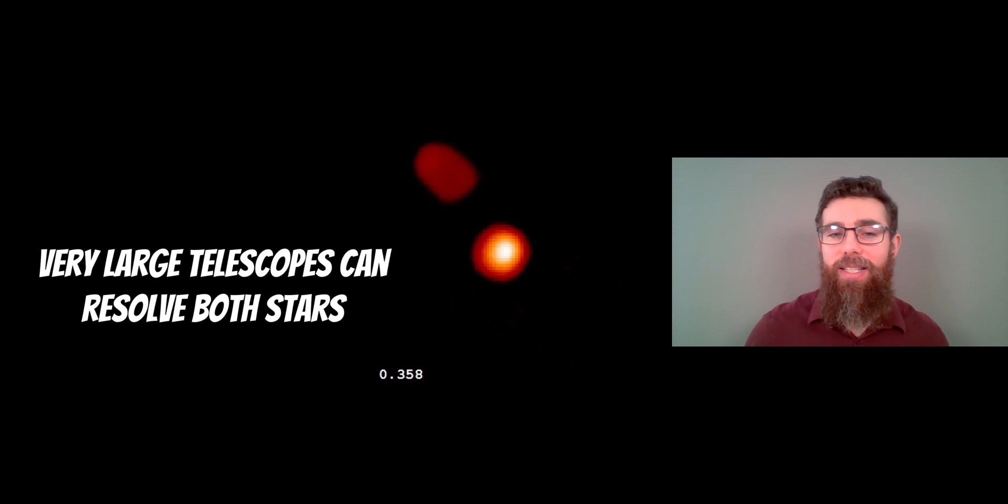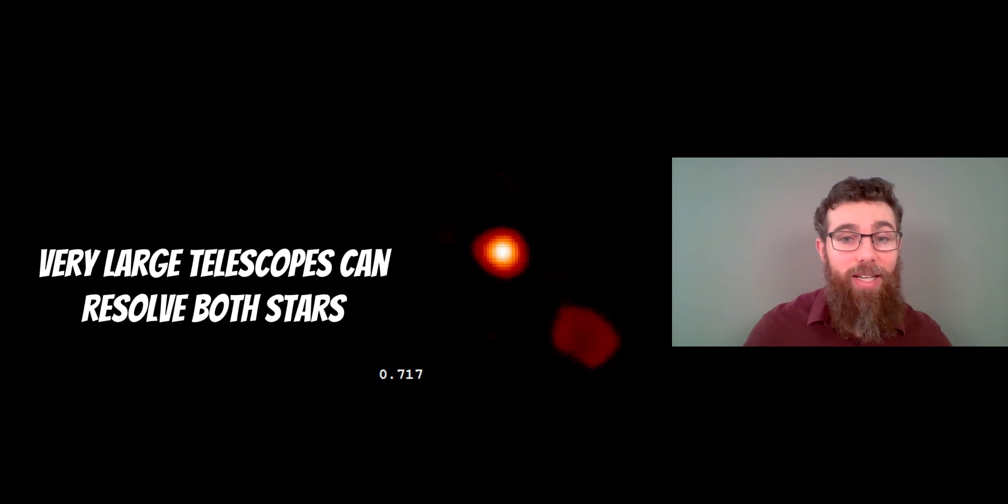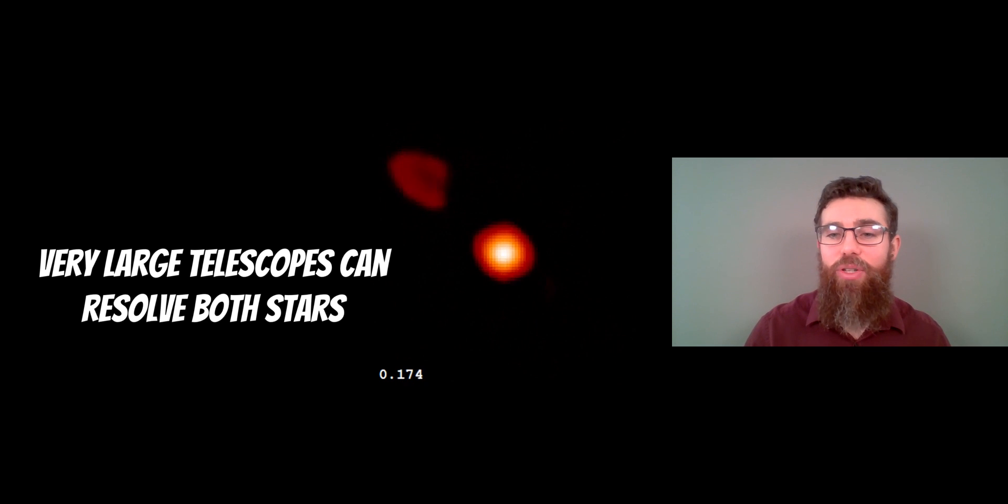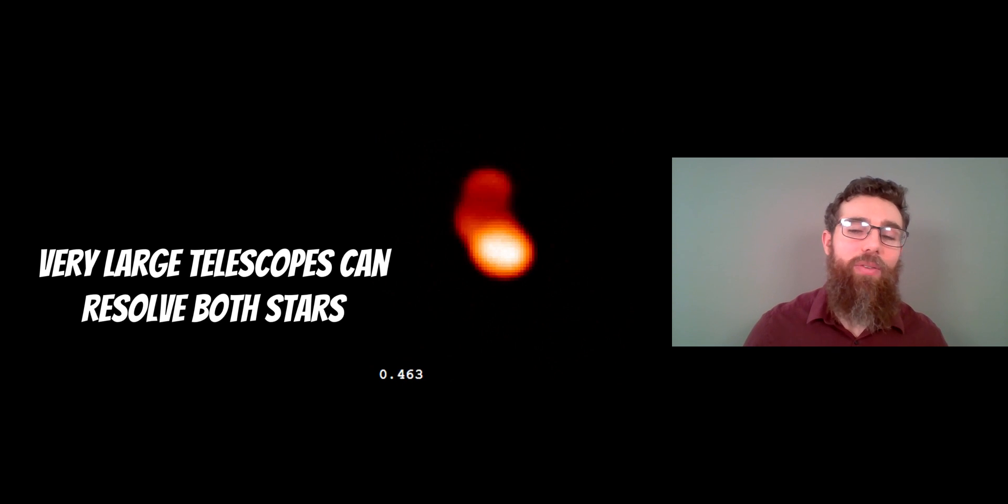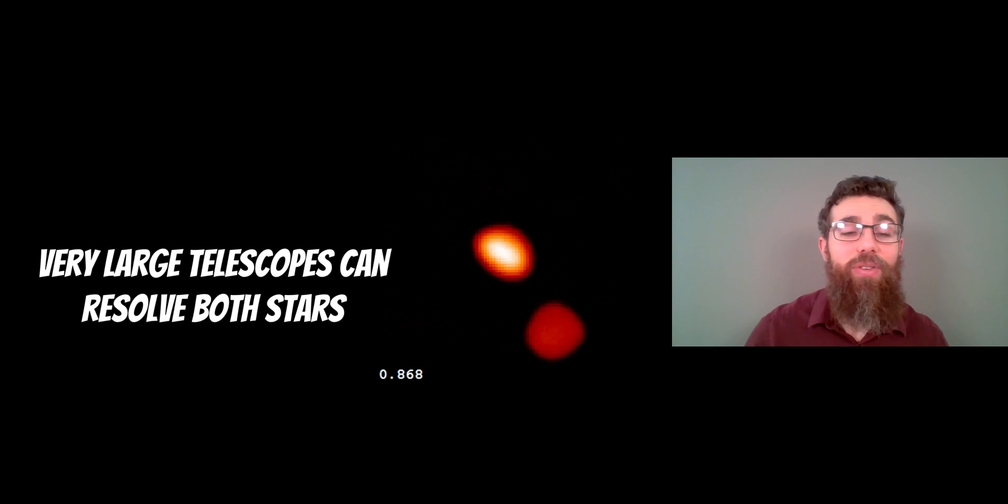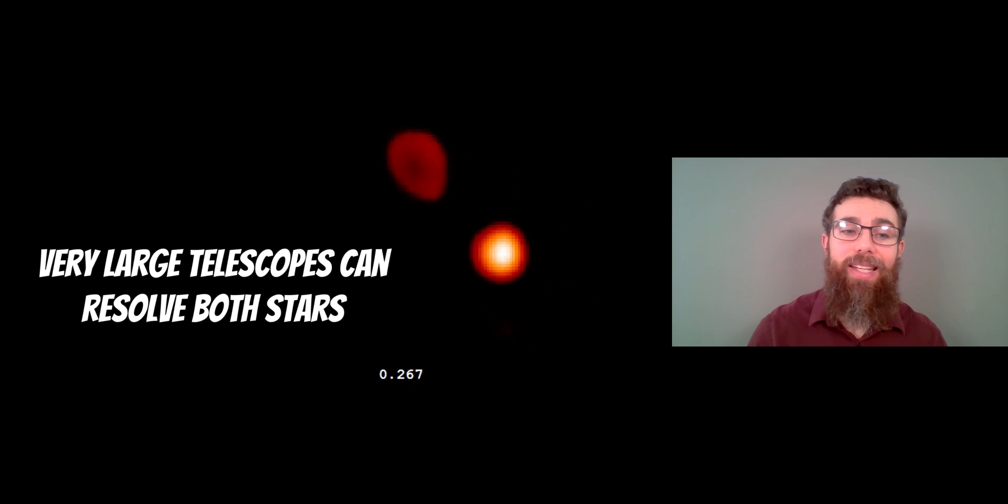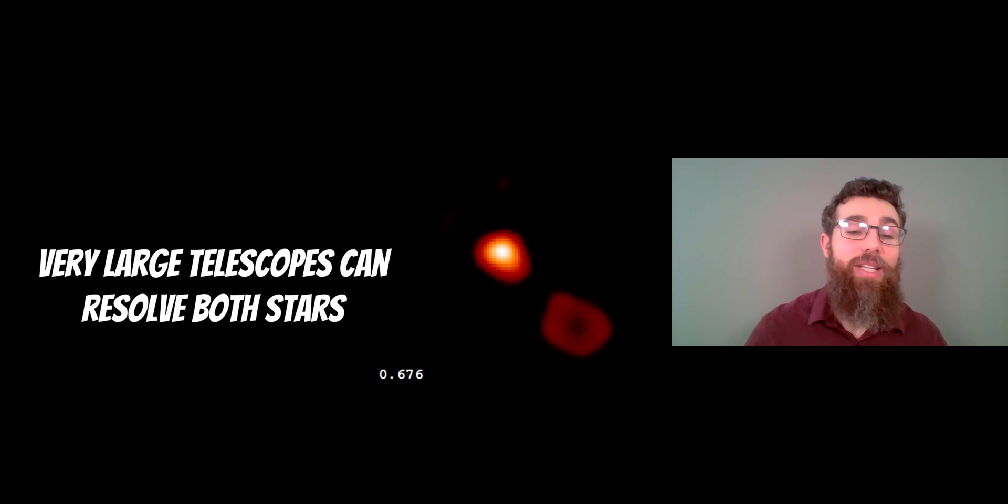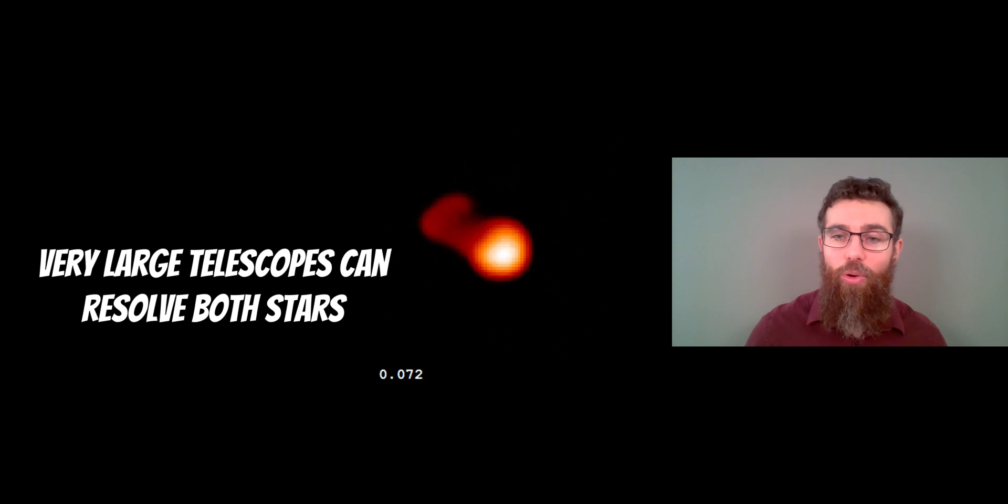But you don't actually need to have large telescopes to find eclipsing binary stars. In fact, you can do it in your back garden with a relatively modest telescope and you can even notice Algol naked eye. You don't even need a telescope because the dip in brightness throughout one orbit is actually fairly significant.